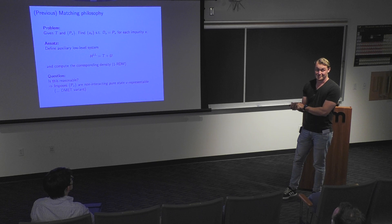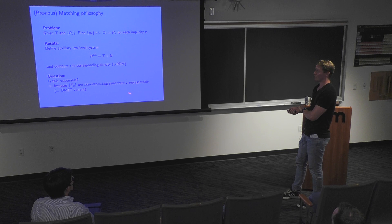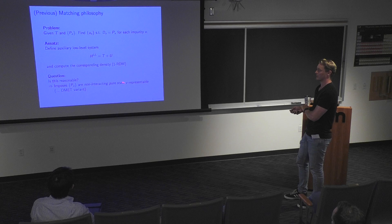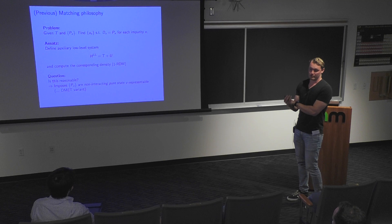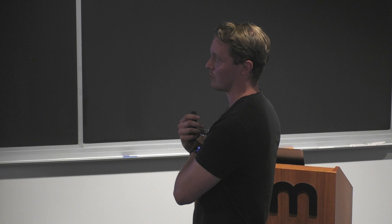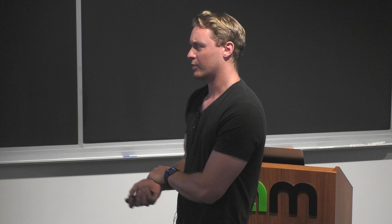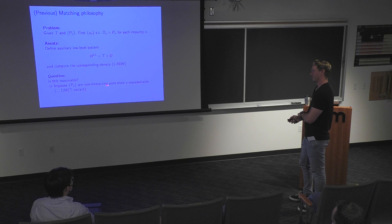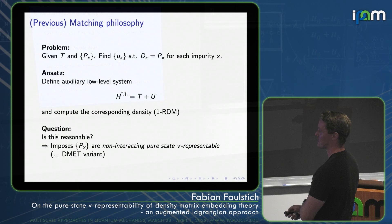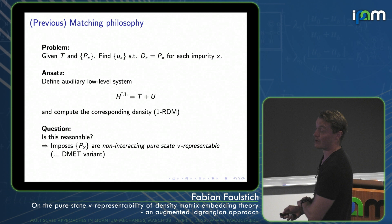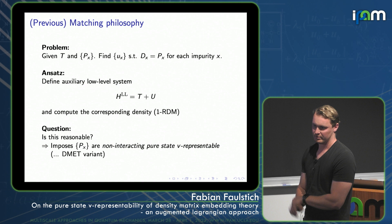For me, as a wave function person, this question didn't pop up. But if you are aware of DFT, you would see the resemblance to what is called non-interacting pure state V-representability of the density matrix. If you are more aware of the DFT community, you know that there this is more of an exception than the norm. But for DMET, it seems to be the norm rather than the exception. This is a polarizing statement, and I acknowledge it's a DMET variant of non-interacting pure state V-representability.